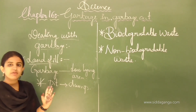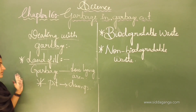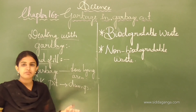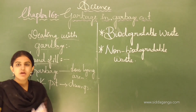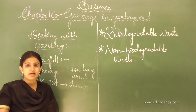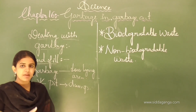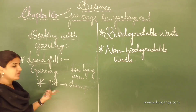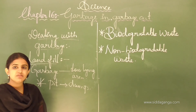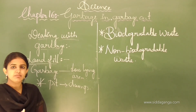Dealing with garbage in the landfill method: first, they dump the waste into the land, then cover it with soil. After several months, the soil becomes manure due to the action of microorganisms like bacteria, fungi, and viruses, which act upon the waste. The soil becomes black in color, forming humus which contains nutrients essential for the growth and development of plants.